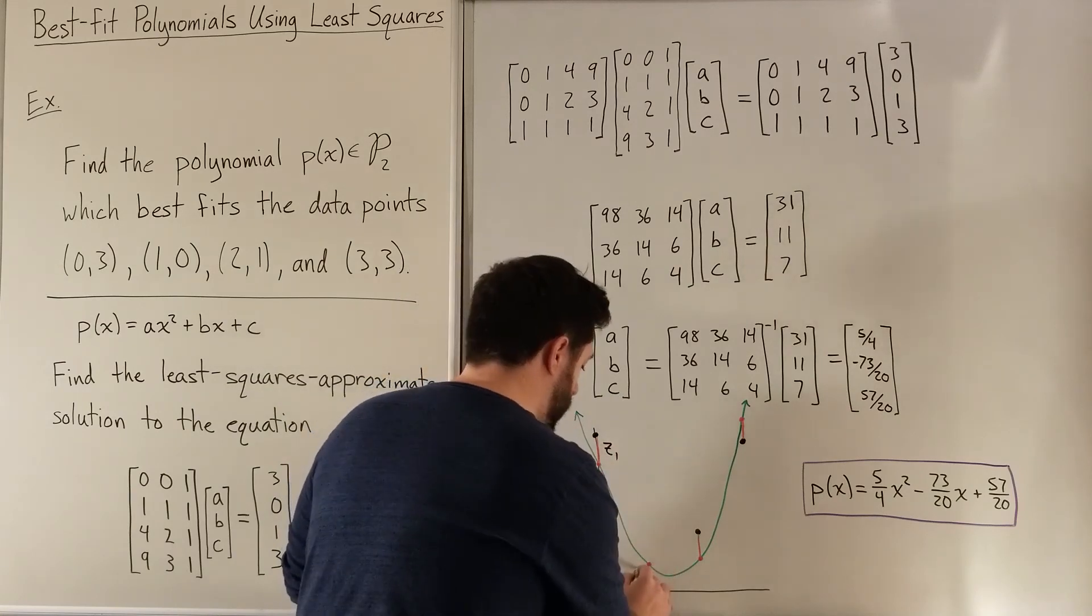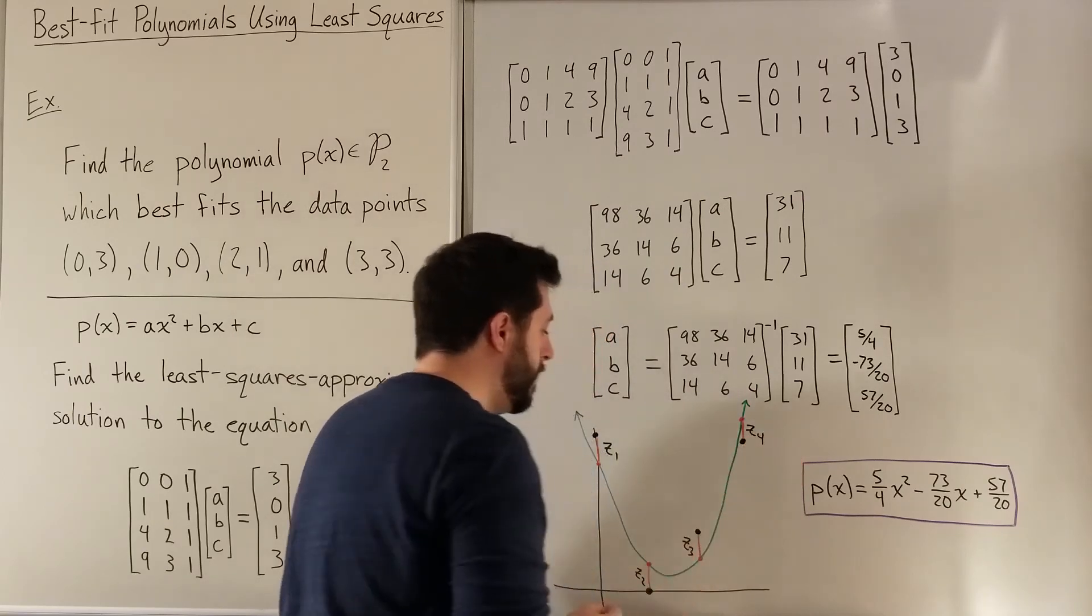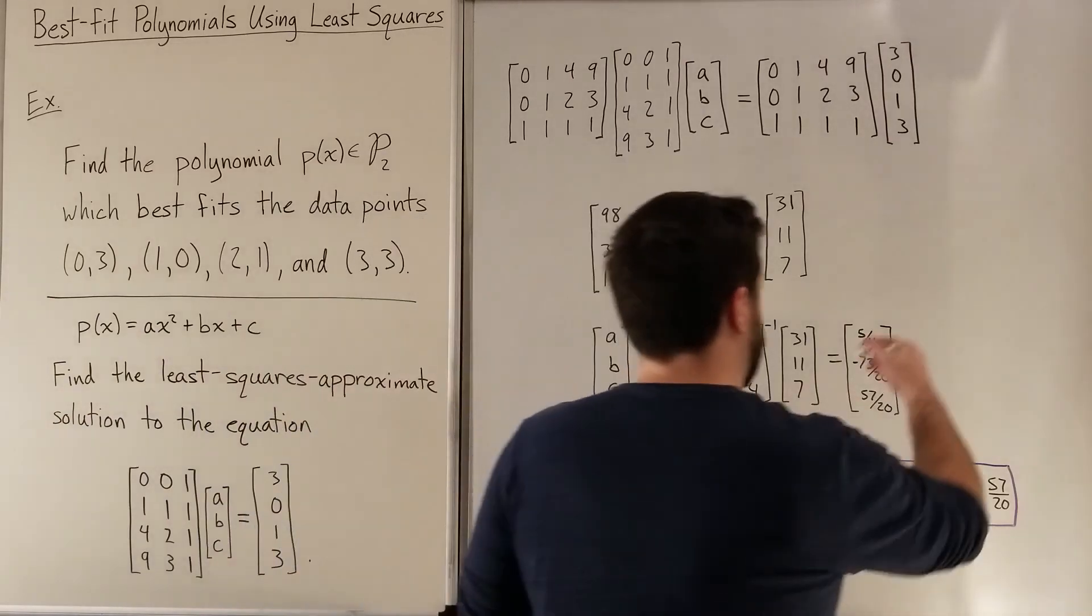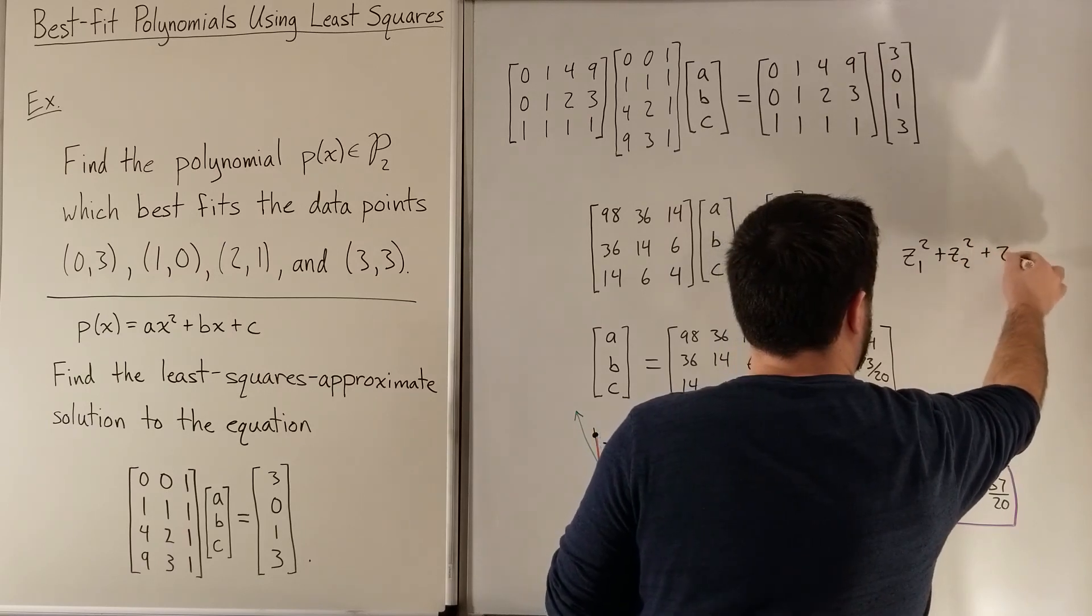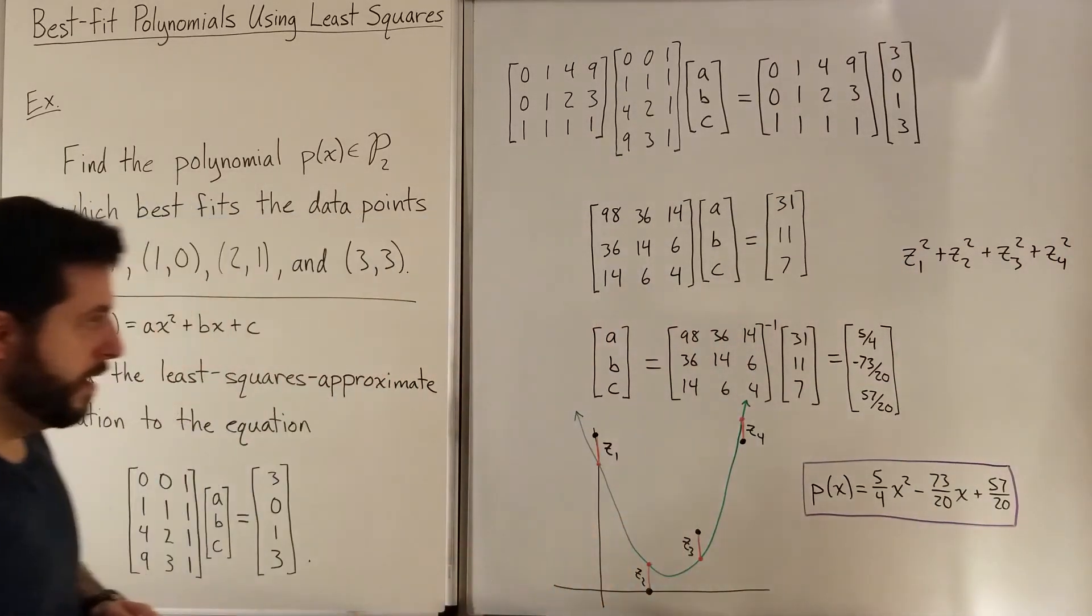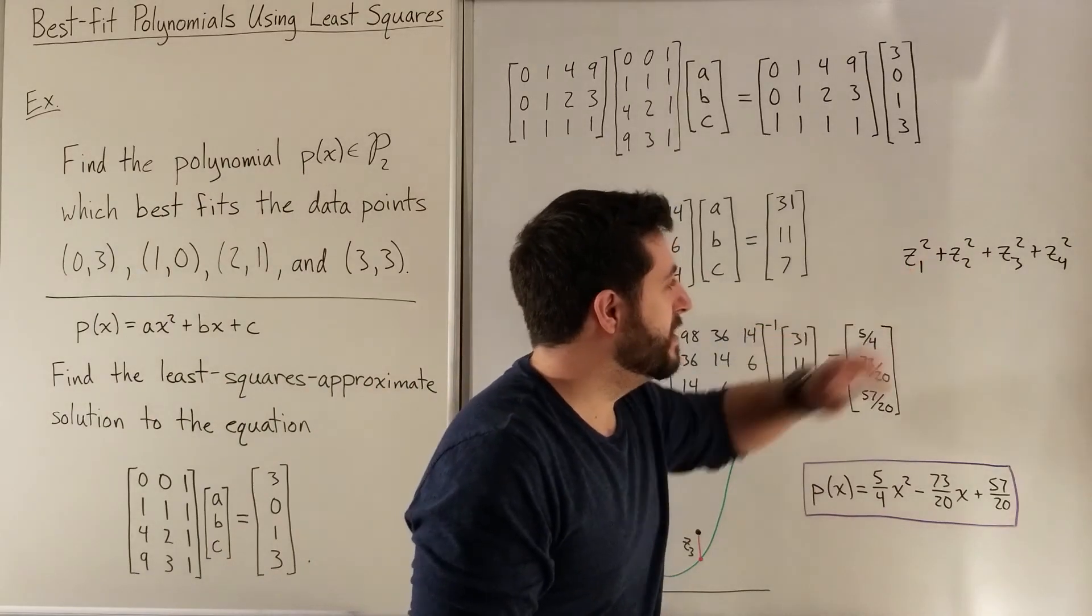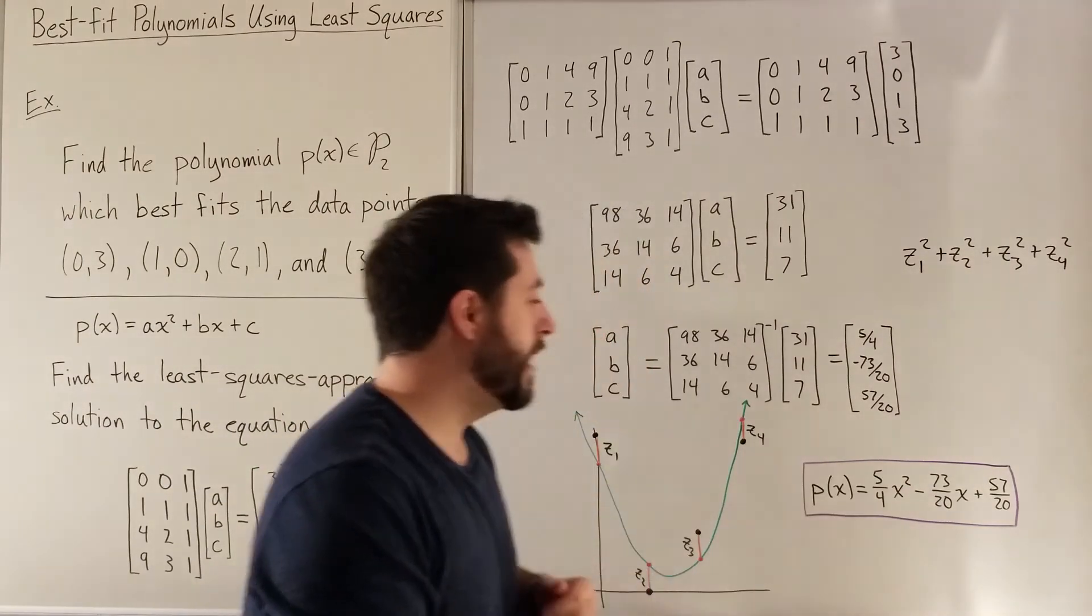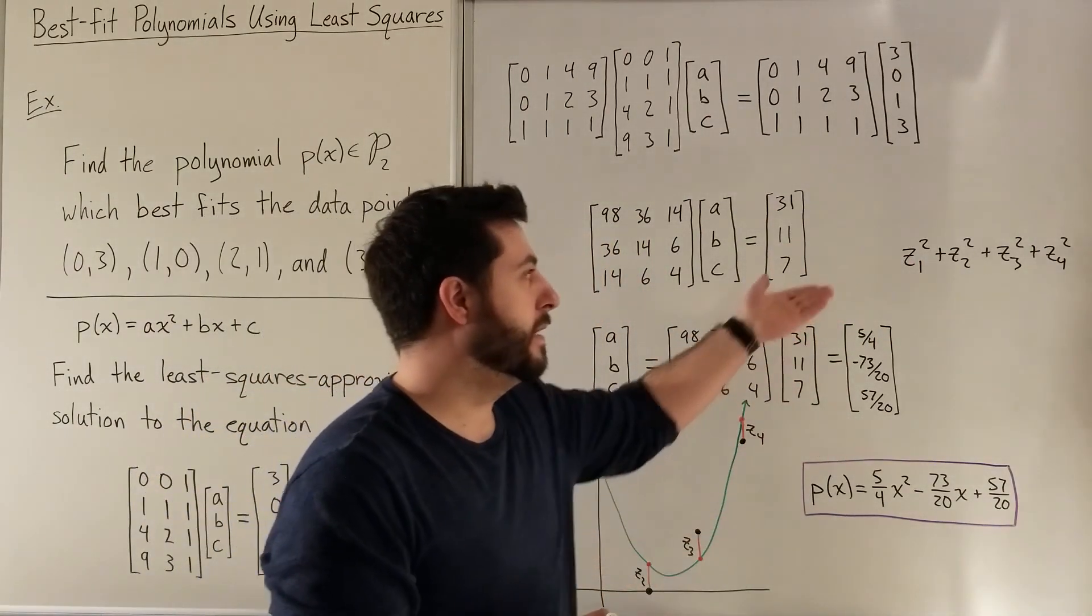which is the difference in the y values for each of those x values. Okay, these distances here. So I'll call them z1, z2, z3, and z4. Our solution is the best in the sense that it is minimizing this value. So our least squares approximate solution is going to be the solution which has the sum of the squares here be as low as possible. Any other possible quadratic polynomial is going to have those distances squared and summed together be a bigger quantity than whatever this is.